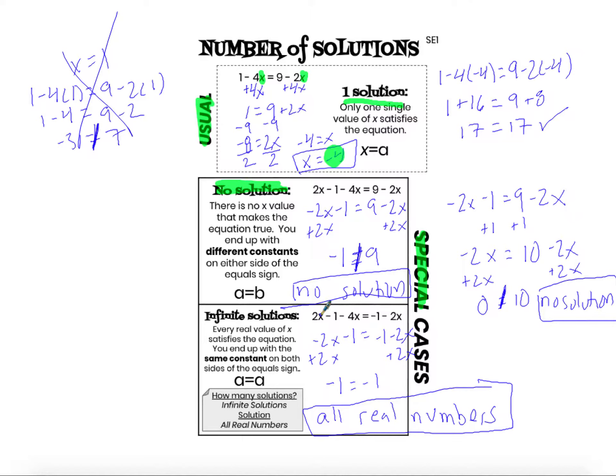If I plugged in 1, 2 times 1 is 2, minus 1 is 1, 1 minus 4 is negative 3. Plugging in 1 over here, negative 1 minus 2 times 1, negative 1 minus 2 is negative 3. So I would have negative 3 equals negative 3. If I plugged in 0 for x, I'd have negative 1 equals negative 1. Any number that I plug in for x gives me a true statement and therefore my solution is all real numbers.